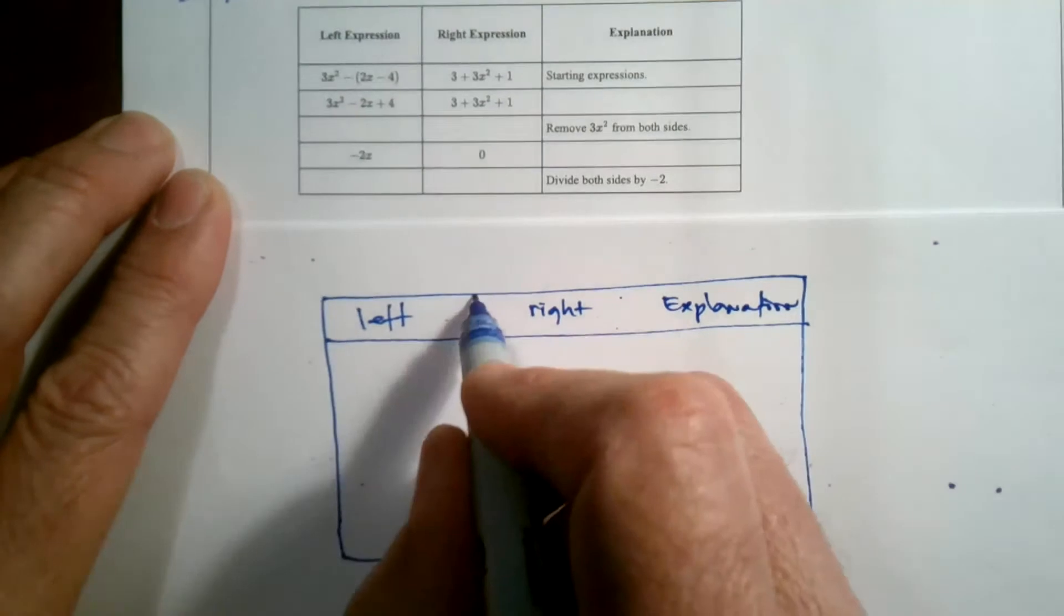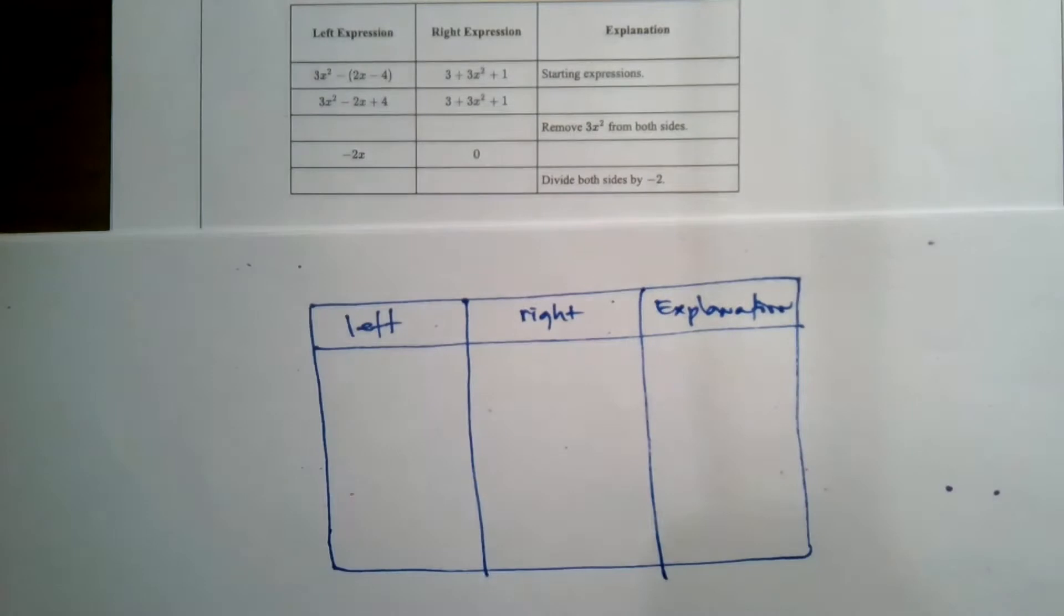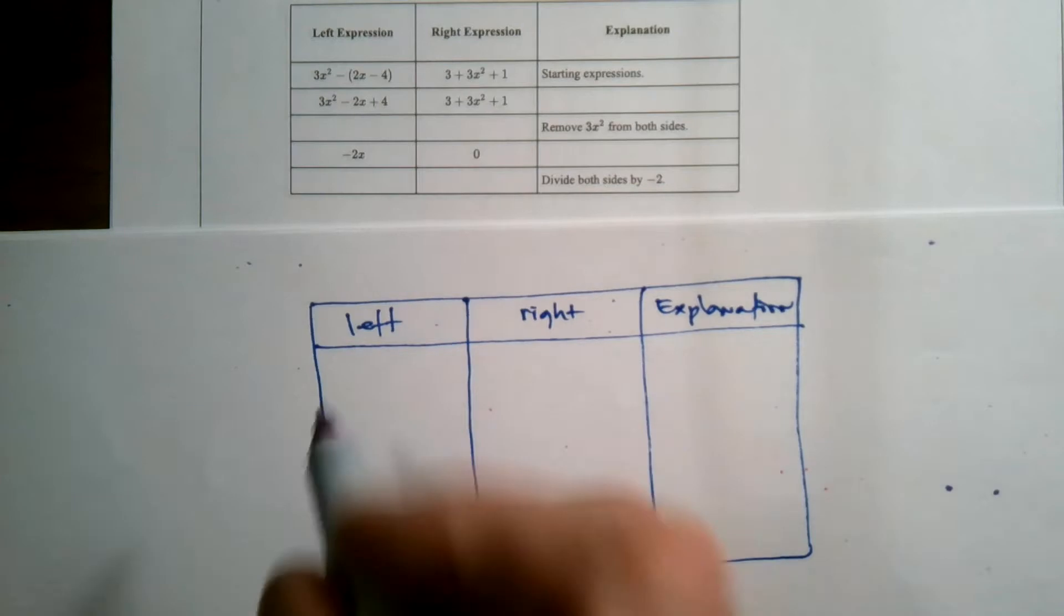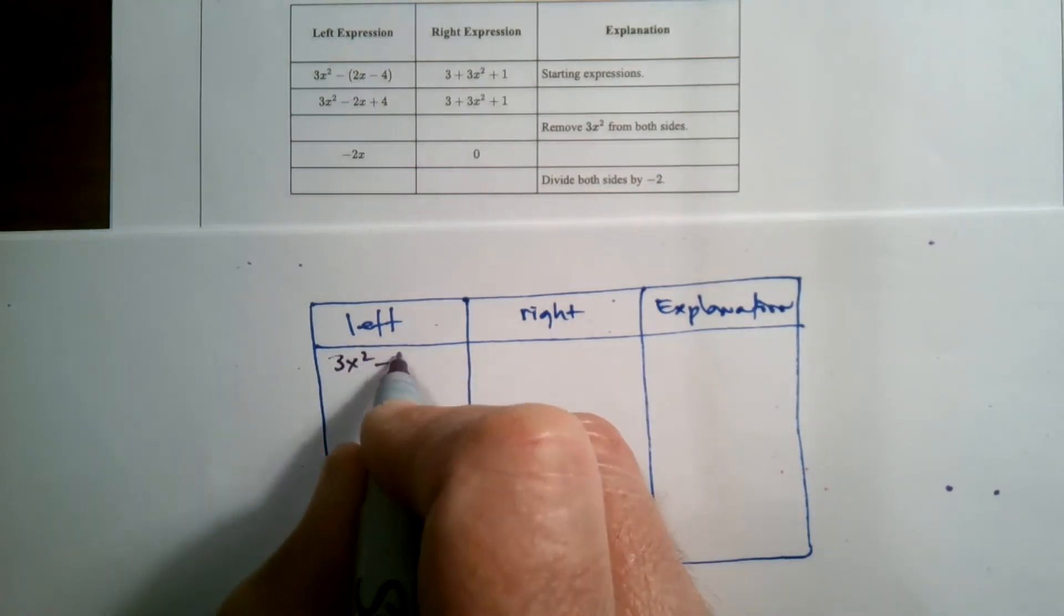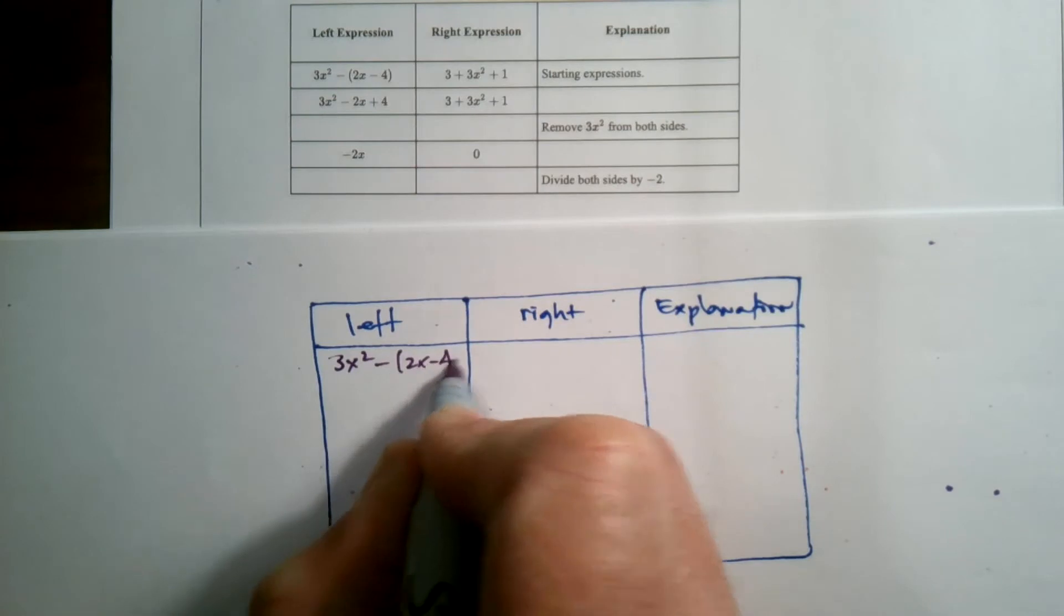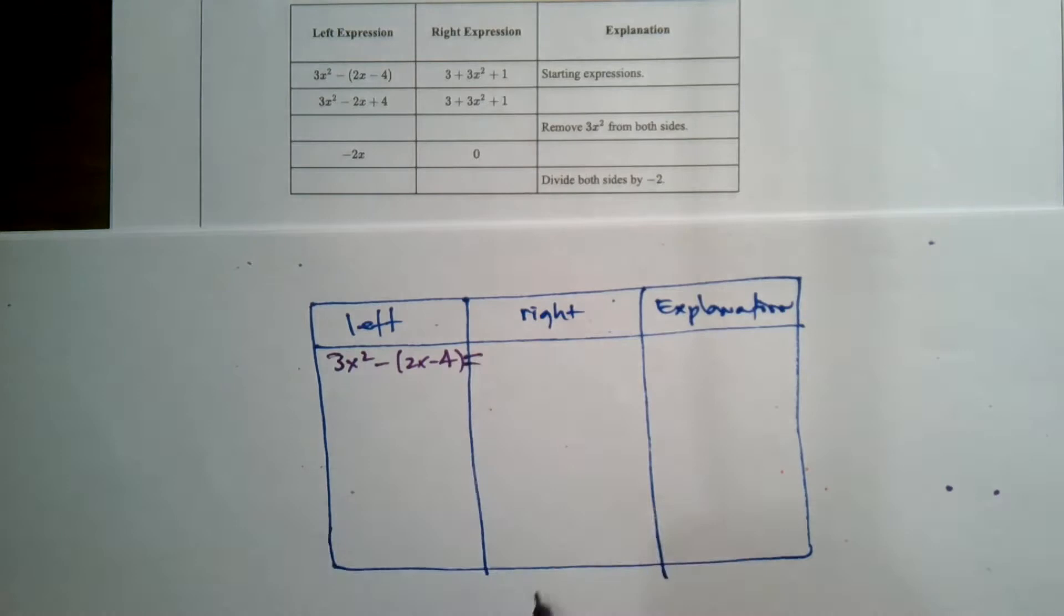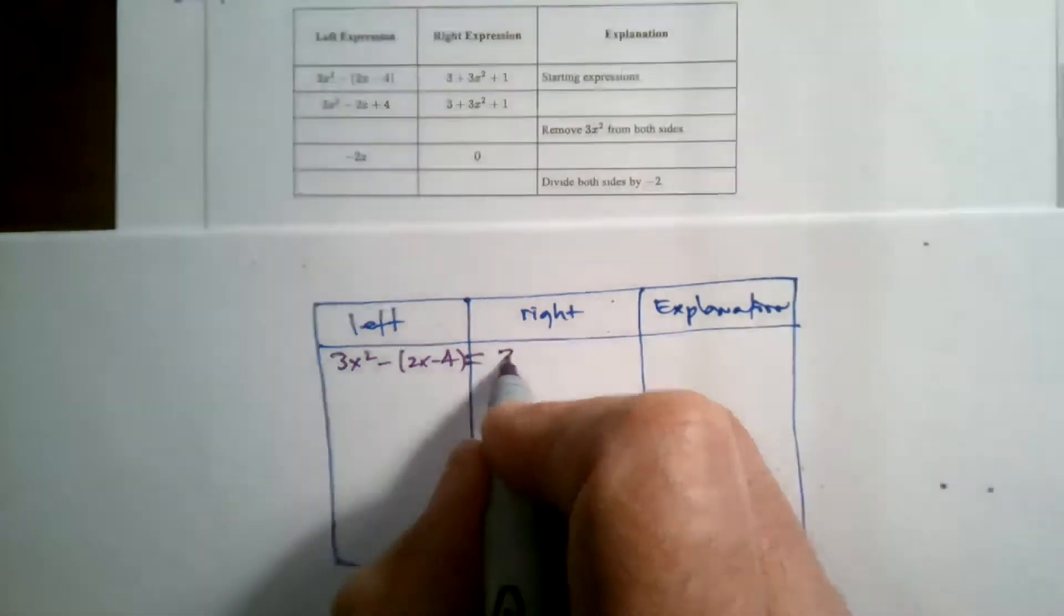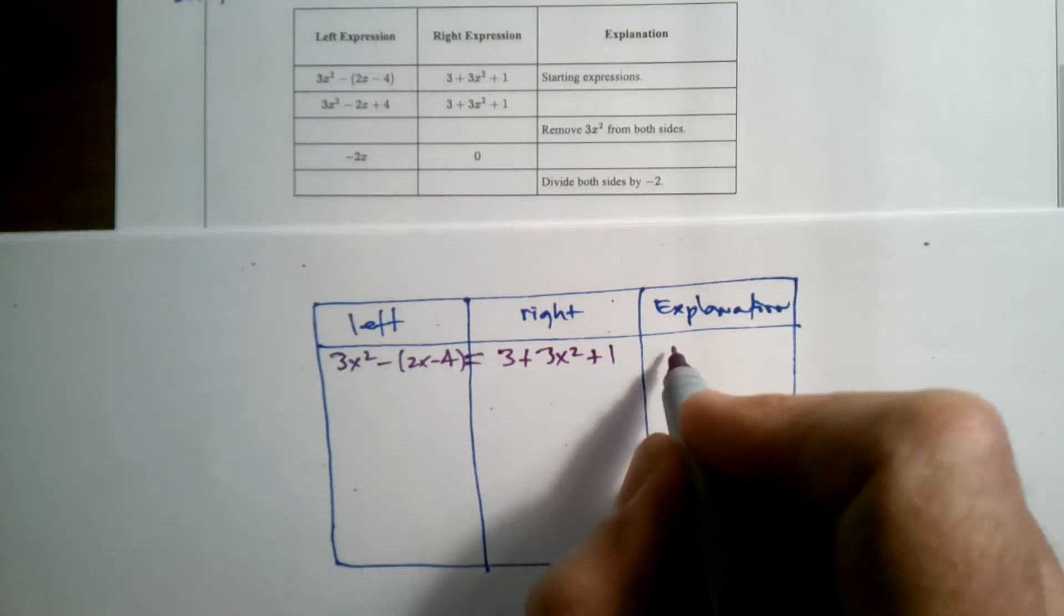So I'm going to put in here, for my first step, it looks like the first step is listed already. So I'm just going to rewrite it so we can see the process: 3x² minus the quantity (2x - 4). That's the left side of the equation. And I'm going to go ahead and put the equal sign in there, equals 3 plus 3x² plus 1.